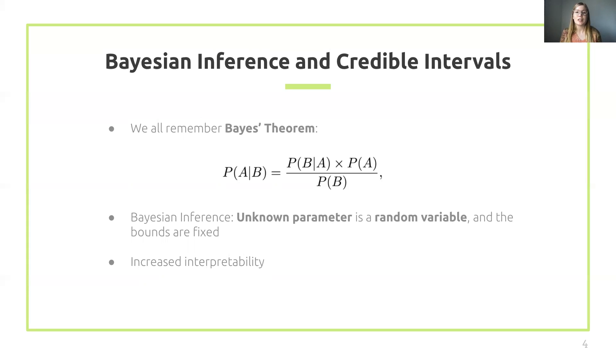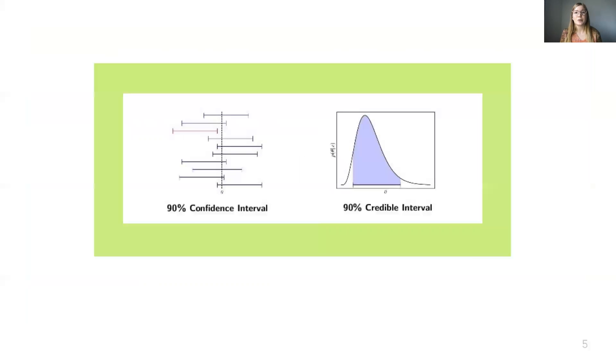A credible interval is a range of values that represents a given level of plausibility based on the posterior distribution. Here is a visualization of the difference between credible intervals and confidence intervals. We will illuminate this visualization with an example.